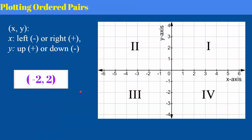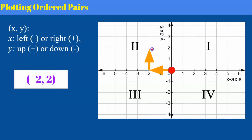Now I'd like you to plot this ordered pair. We're going to start from the origin. The x coordinate is negative two, which tells me I must go left two. My y coordinate is positive two, which tells me I'm going to go up two and plot my point.